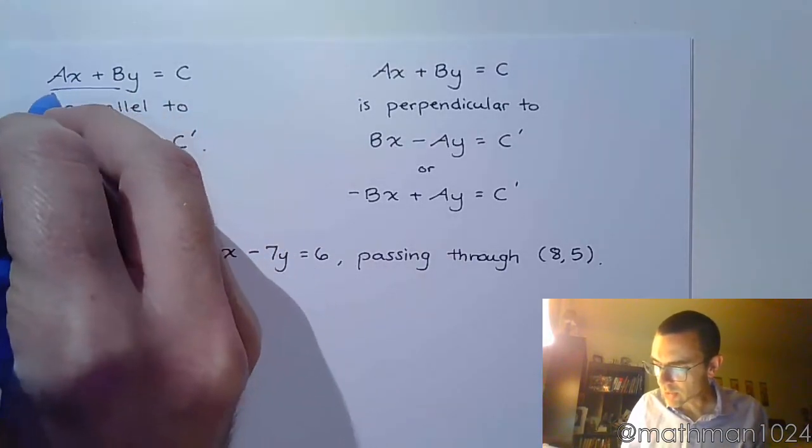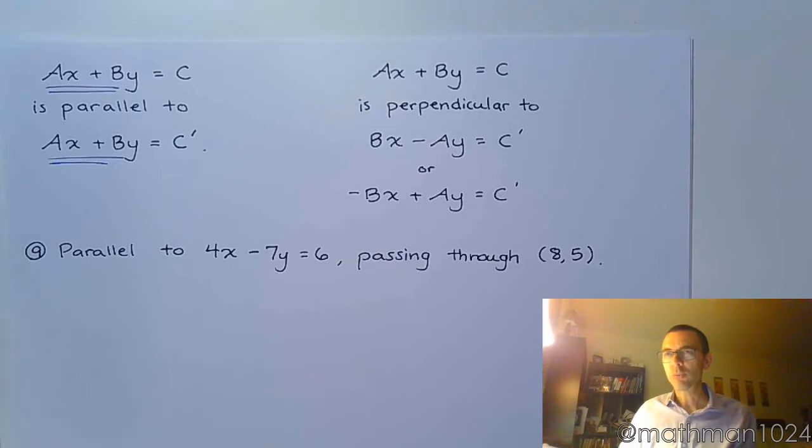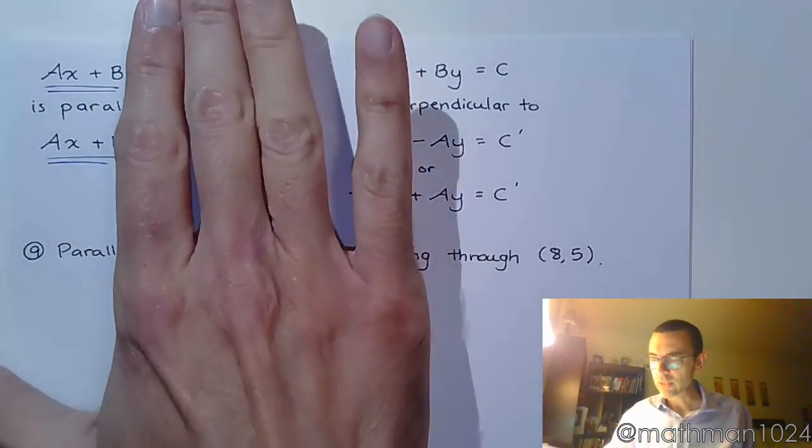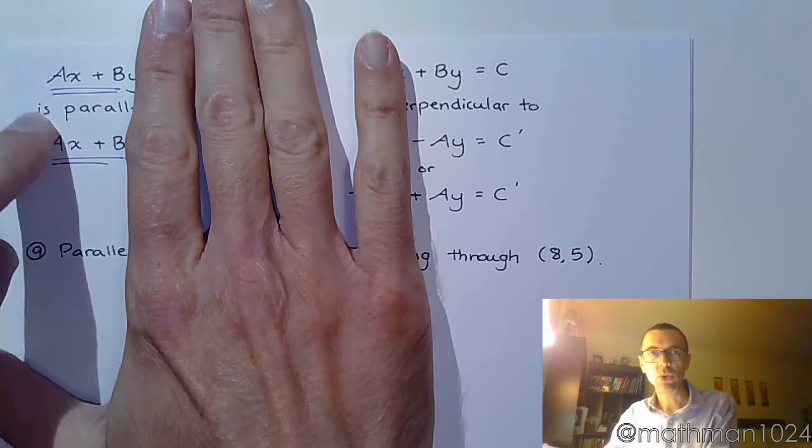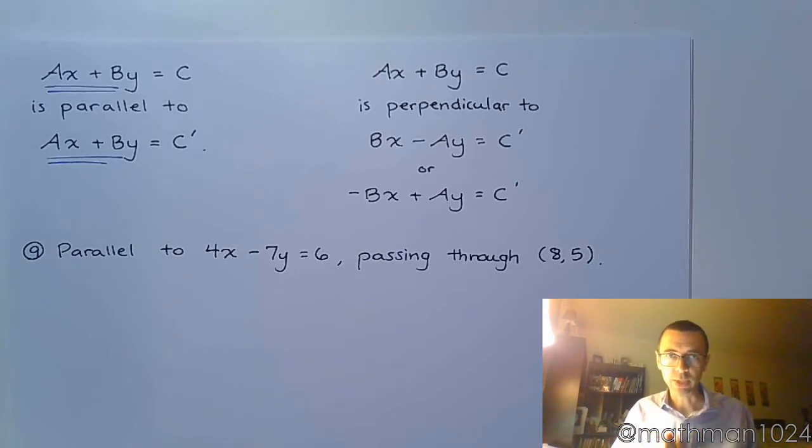But notice that the left side stays exactly the same, because when it comes to your slope, your slopes have to be the same for parallel lines, and it's this side right here that gives you your slope, the Ax plus By. So as long as that's the same, then your slope's going to be the same, and your constant just has to be something different.